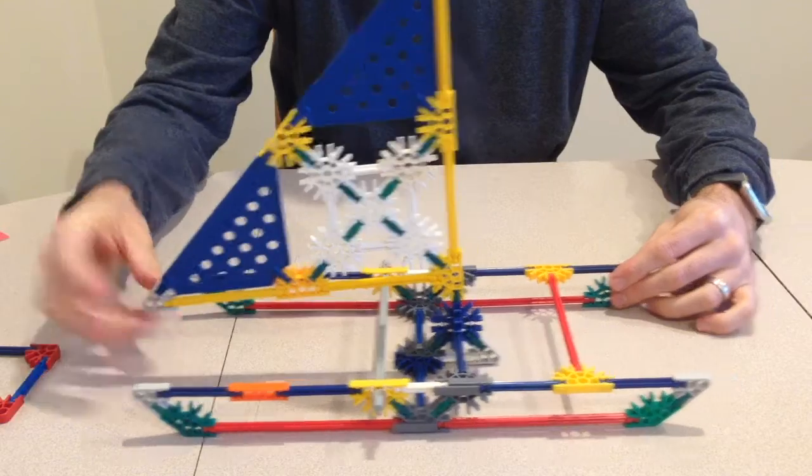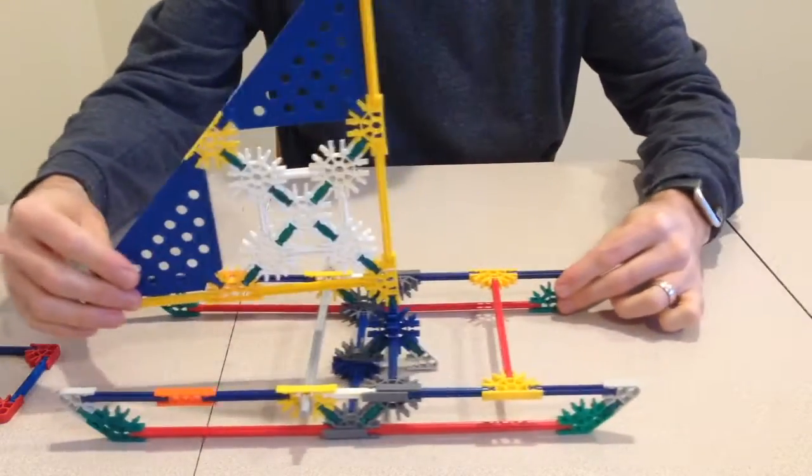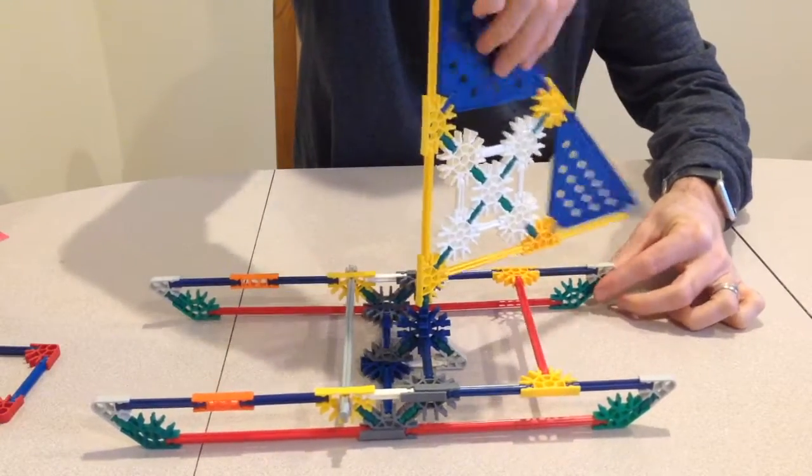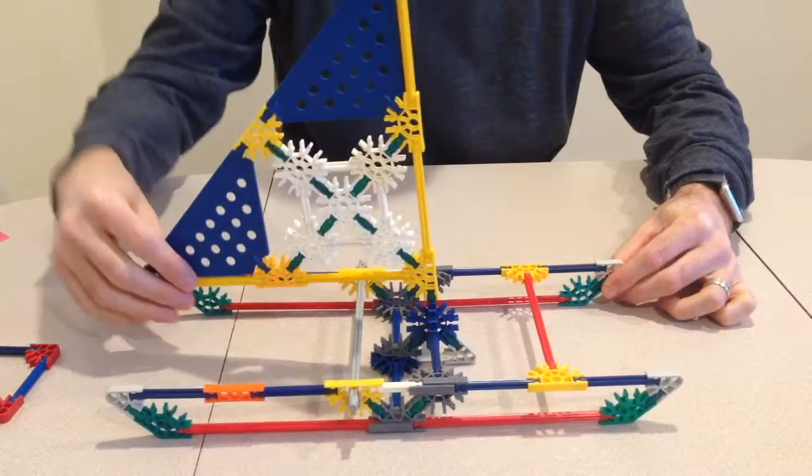There you have it. A simple catamaran made of K'nex pieces. I hope you enjoyed building and playing with it. Be sure to like the video and subscribe to see how to build more fun models.